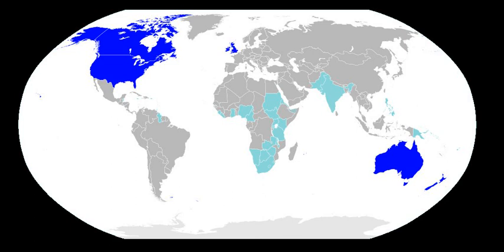By the Wycliffe Bible of the 1380s, the passage Matthew 8:20 was written: 'Foxes han dens, and birds of heaven han nests' — the plural suffix -n on the verb 'have' is still retained, but none of the case endings on the nouns are present. By the 12th century Middle English was fully developed, integrating both Norse and Norman features; it continued to be spoken until the transition to Early Modern English around 1500. Middle English literature includes Geoffrey Chaucer's The Canterbury Tales and Malory's Le Morte d'Arthur. In the Middle English period, the use of regional dialects in writing proliferated.